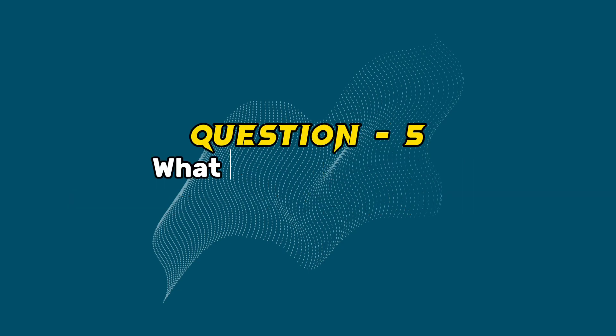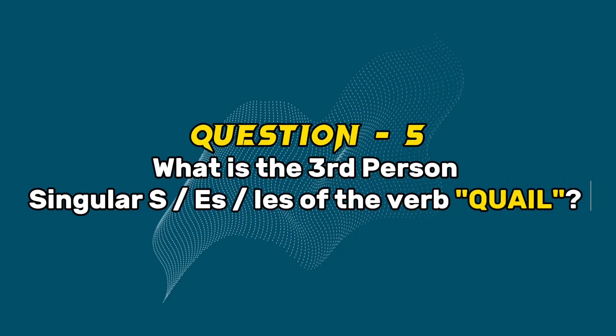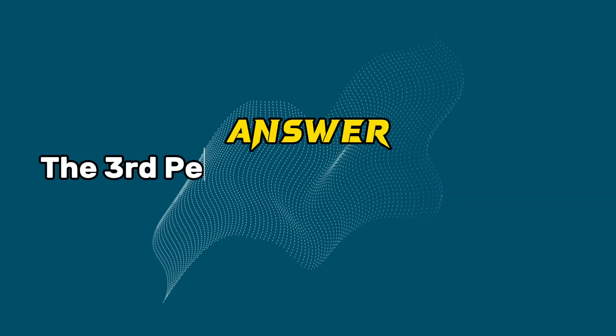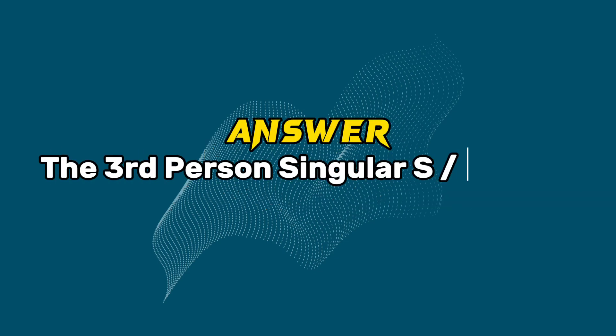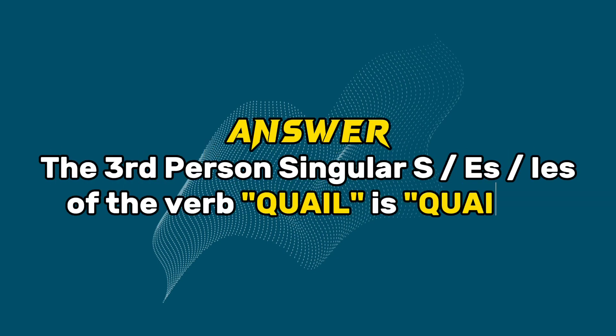Question 5: What is the third person singular of the verb Quail? Answer: The third person singular of the verb Quail is Quails.